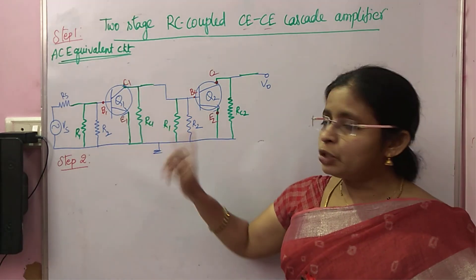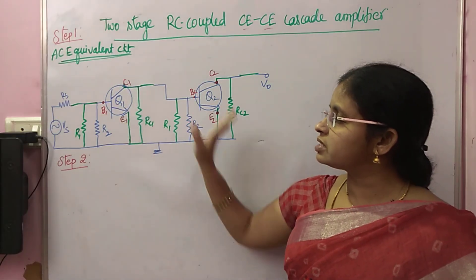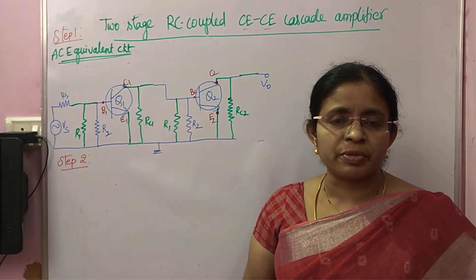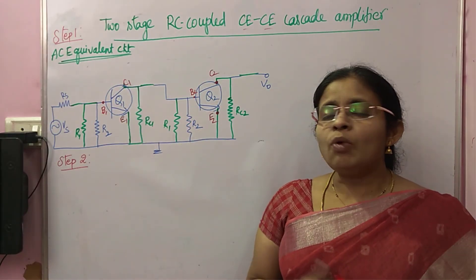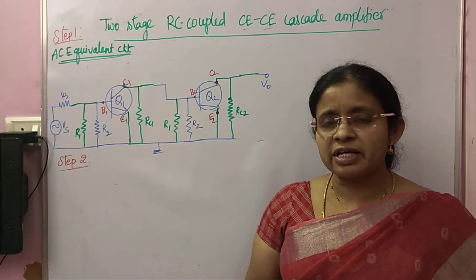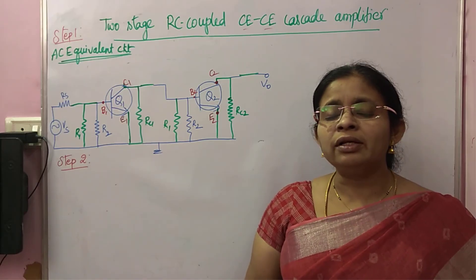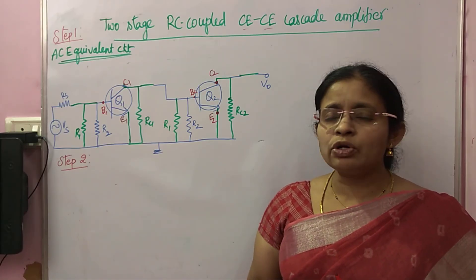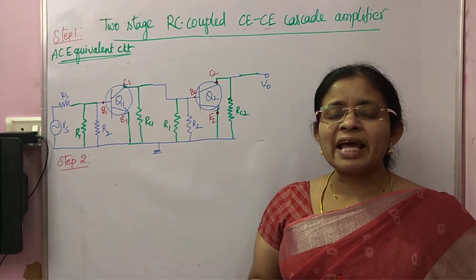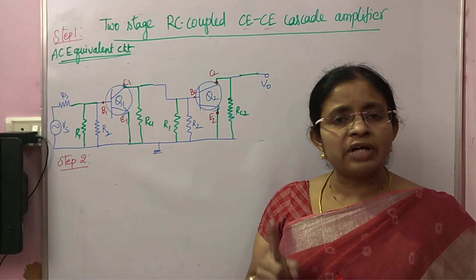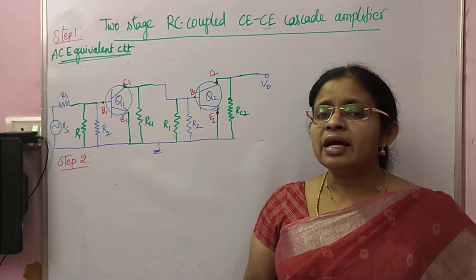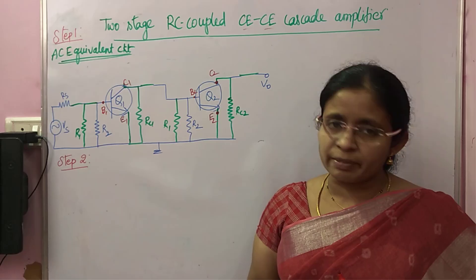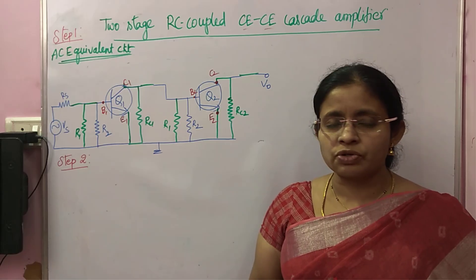Step 2 is you have to replace the transistor with its approximate H-parameter model. The approximate H-parameter model consists of only two elements: between base and emitter you have HIE, and between collector and emitter you have HFE·IB, the current source.